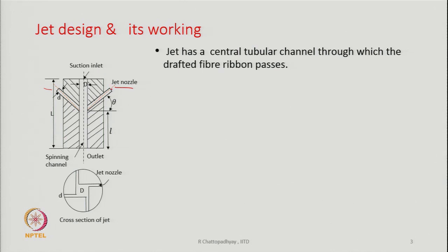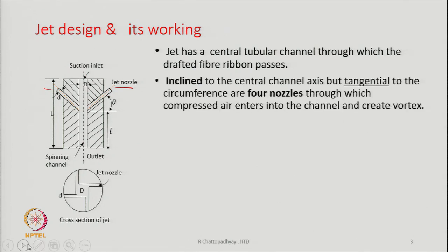The entire structure is the jet housing, and there is a central core part in the jet which is hollow. This jet has a central tubular channel through which the drafted fiber ribbon will pass. Fibers will enter from one side into the spinning channel. Inclined to the central channel axis but tangential to the circumference are four nozzles.